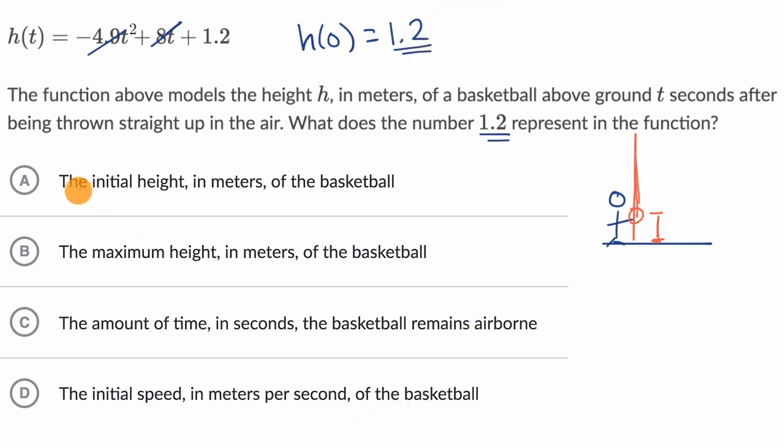So let's see, it looks like that's exactly what they're saying for choice A, the initial height in meters of the basketball. The maximum height in meters of the basketball, no, that's definitely not saying that. The maximum height is not going to occur at t equals zero. It's going to occur sometime after that, rule that one out.